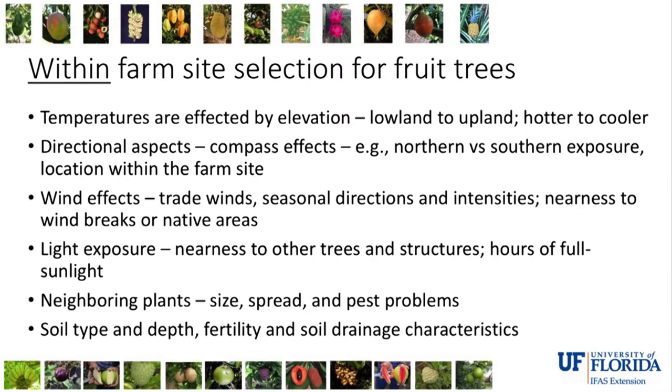Within a farm site, temperatures are affected by elevation. If you have farms in hilly areas, there will be microclimates at the bottom, middle, and top of the hill. In general, lowland tropical areas tend to be hot and humid; as you move up the hill it gets cooler. At high elevations you may actually have more of a subtropical climate. Northern versus southern exposures within the farm can also affect hours of warm or cool temperatures, wind effects, and trade winds.